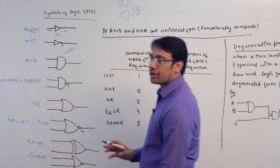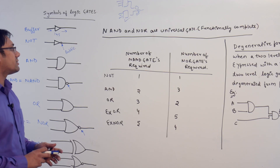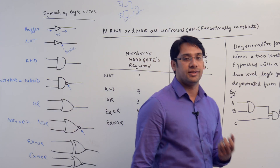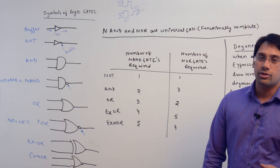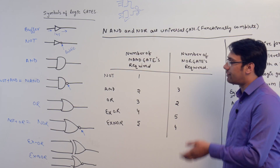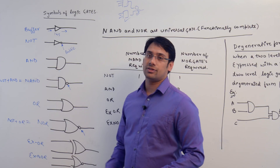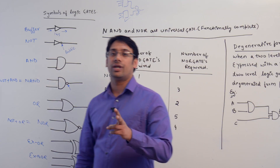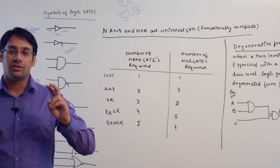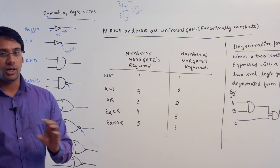We can create one gate with another gate. NAND and NOR gates are generally called universal gates because you can design any other gate using them. You don't actually need all these different kinds of gates. Generally in the market, all these different kinds of gates are not available — only NAND gate and NOR gate are mostly used, and just with their help you can represent all other gates.